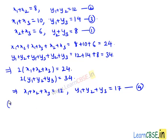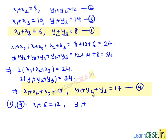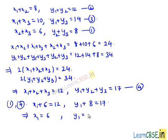Now taking equation number 1 and equation number 4, we have x2+x3 = 6, so x1 + 6 = 12. And y2+y3 = 8, so y1 + 8 = 17. This implies x1 = 12 − 6 = 6, and y1 = 17 − 8 = 9. Hence the coordinates of point A are (6, 9).